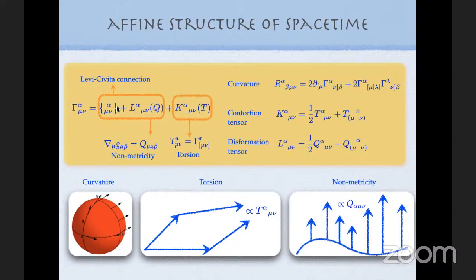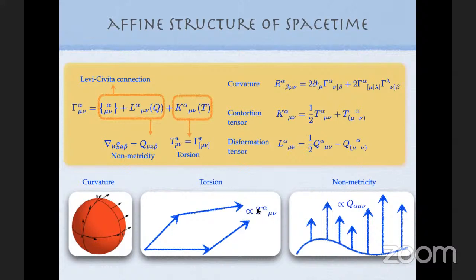In general, a connection can be split differently. As an independent object in four dimensions, it has 64 different components — a lot of freedom we usually don't use because we fix it to be the Levi-Civita. Whenever you have a metric, you can split the connection in terms of the non-metricity, which measures the incompatibility of the metric with the connection, giving the disformation tensor. The anti-symmetric part of the connection gives the torsion, which contributes the contorsion. These have nice geometric interpretations.